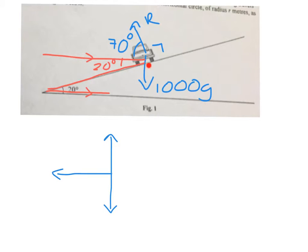The 1000G is acting down, so I can add it on to my diagram.